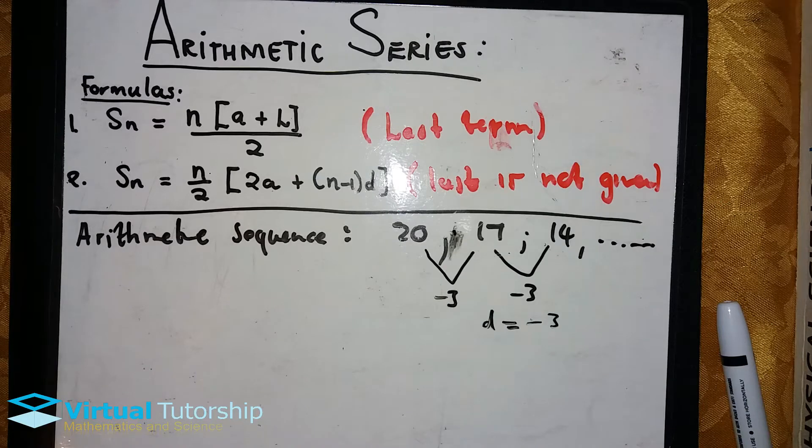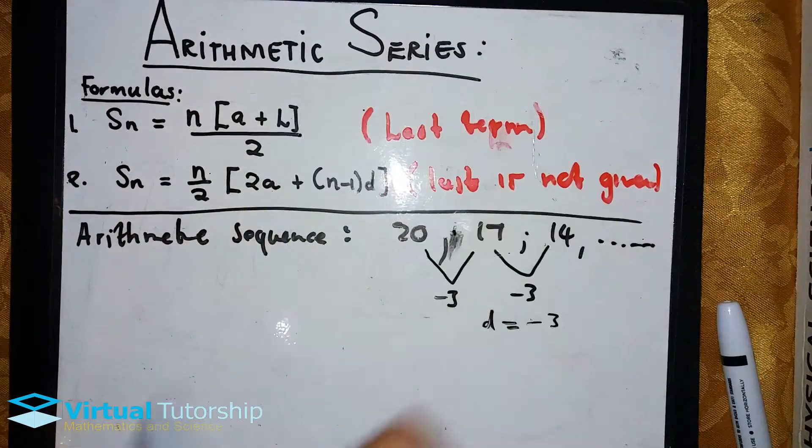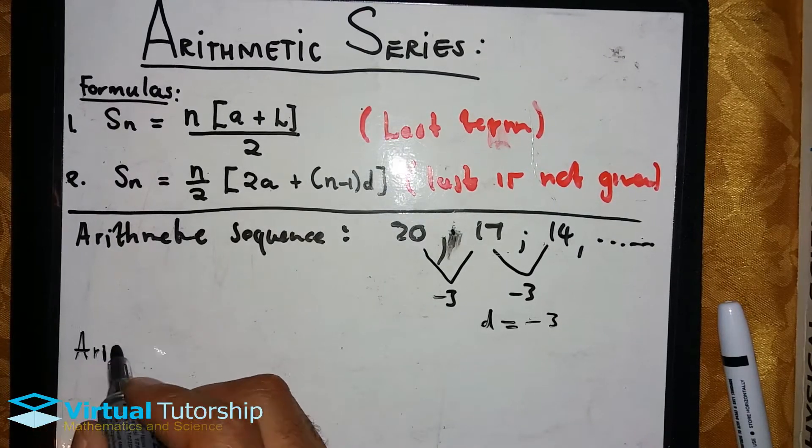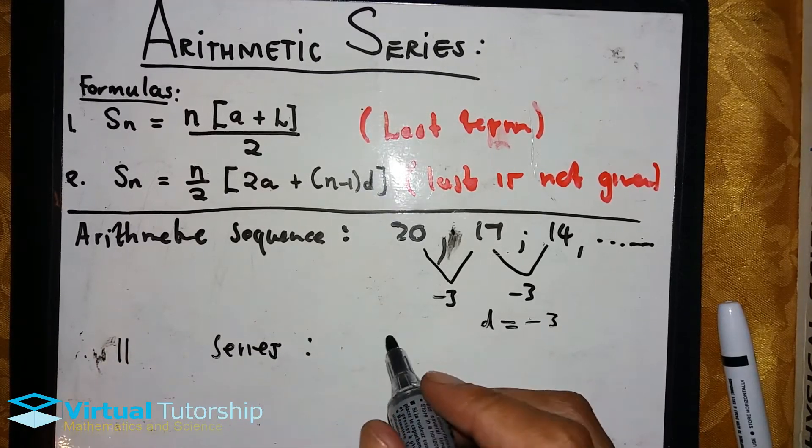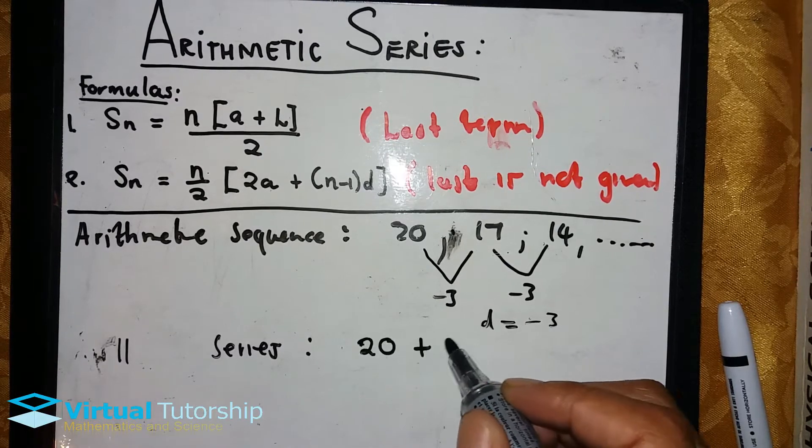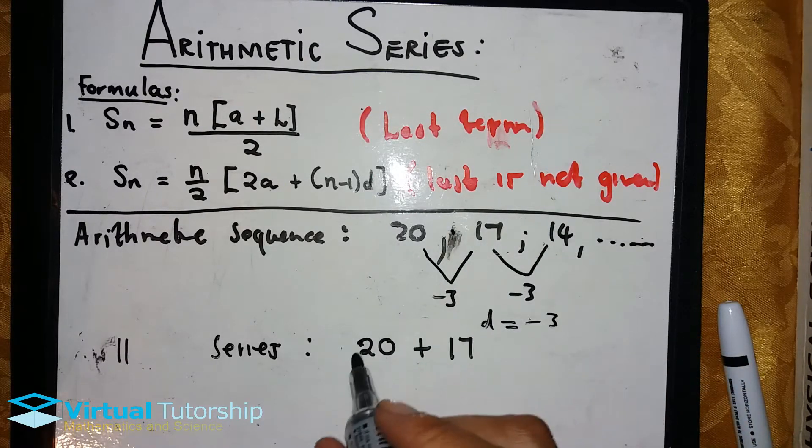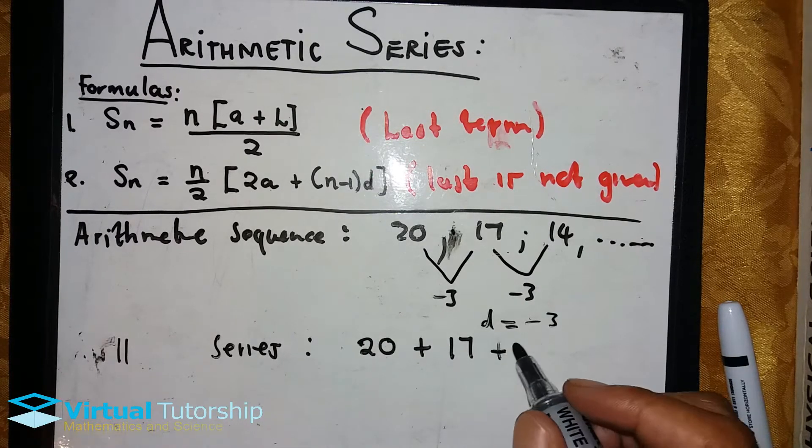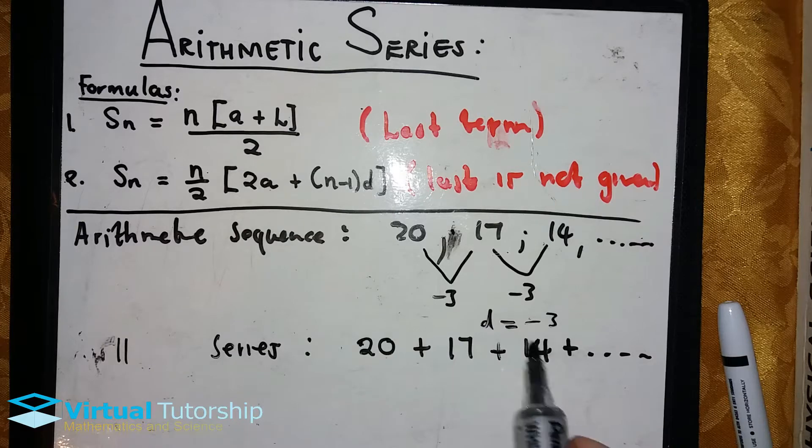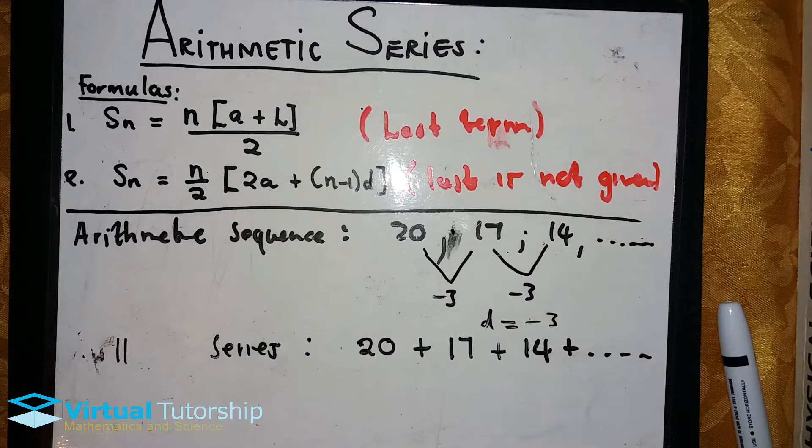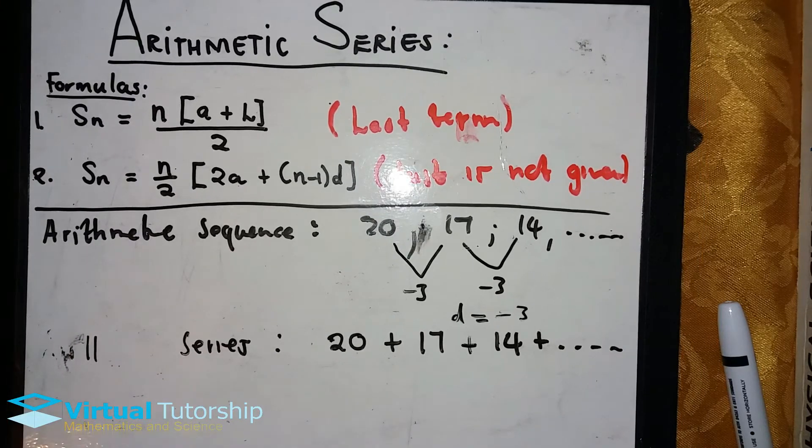An arithmetic series is related to the arithmetic sequence. The arithmetic series example would be the same sequence, the only difference is that instead of looking at the terms individually, we add the terms. So we have 20 plus 17 plus 14 plus all the way up to infinity. In a series we are adding the terms, in a sequence we are just listing them individually.